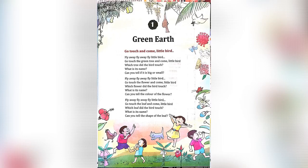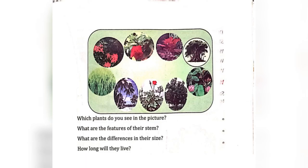Lesson 1: Green Earth. In this page, we can see pictures of different plants like rose, banyan tree, coconut tree, etc.